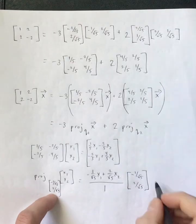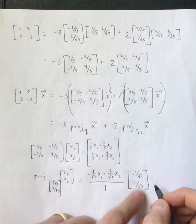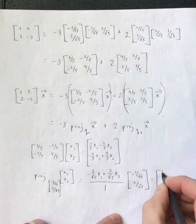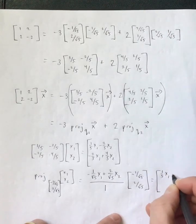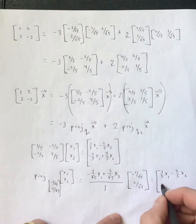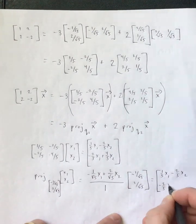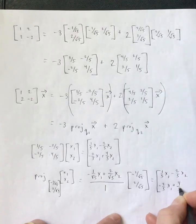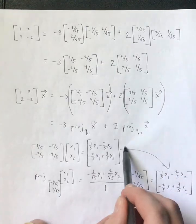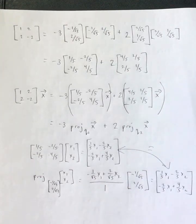So, negative 1 over root 5 x1 plus 2 over root 5 x2 over the dot product of this vector with itself. And remember, it was a unit vector, so we're just going to get a 1. And then we will multiply that by this vector. That will be the scalar that goes on this vector. And so, notice that if I were to distribute this across to both components, I would get 1 5th x1 minus 2 5ths x2. And then down here, negative 2 5ths x1 plus 4 5ths x2. And you can see that that is, in fact, the same thing that we ended up with when we just multiplied by this matrix.